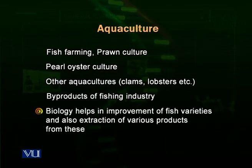How does biology help us in aquaculture? Biology helps in the improvement of fish varieties and the extraction of various products. This is extremely important. When growing fish in a fish farm, sometimes we grow monoculture — only one type of fish in a pond. But many times, the study of biology tells us that growing a combination of compatible fishes is better.